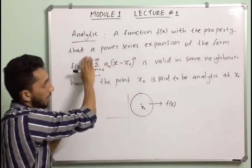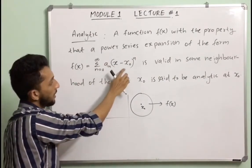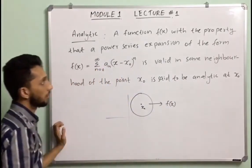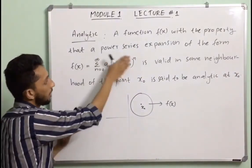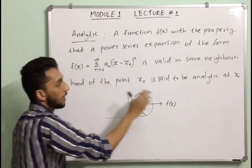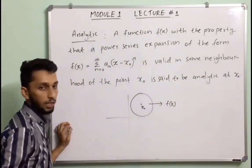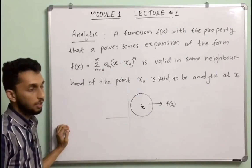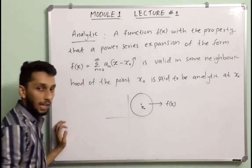Analytic: A function f(x) with the property that a power series expansion of the form f(x) = summation n from 0 to infinity of aₙ(x − x₀)ⁿ is valid in some neighborhood of the point x₀ is said to be analytic at x₀. That is, if the power series expansion represents f(x) at a point x₀ in some neighborhood, the function is analytic at that point.